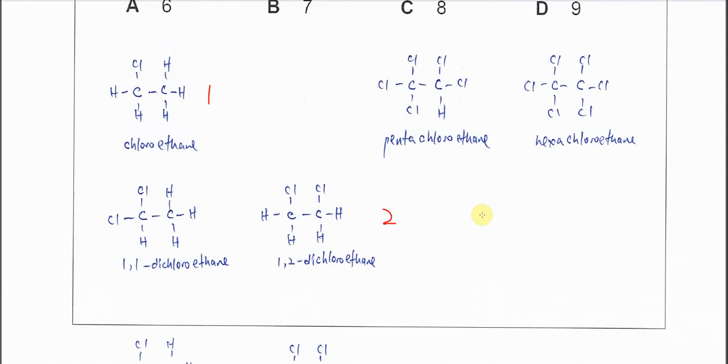It can be pentachloroethane as well, so it has five substitutions here. And the hydrogen can all be substituted by chlorine to form hexachloroethane. So we count again, here is one...